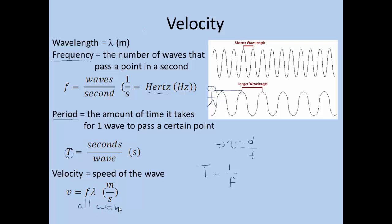We have the velocity is equal to frequency times the wavelength. And our units will still end up to be meters per second, because frequency is one over seconds, and wavelength is in meters.